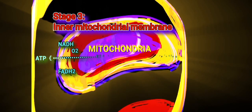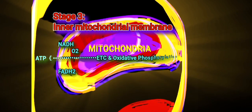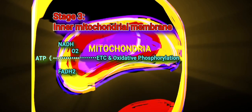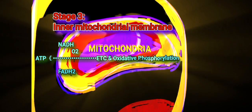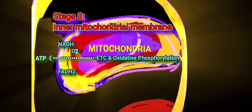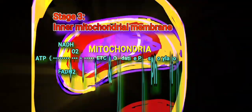The purpose of the third stage of catabolism is to convert the high-energy molecules NADH and FADH2 into a usable form of energy that can be readily used by the cell, namely ATP. This occurs through the coupled process of electron transport and oxidative phosphorylation.